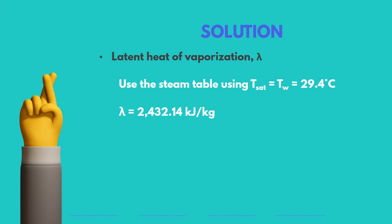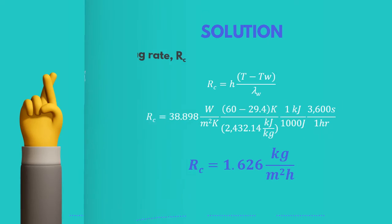We can find the latent heat of vaporization for water by using the steam table at the saturation temperature, which is equal to the temperature of the solid surface, 29.4 degrees Celsius. Solving for the drying rate with the necessary unit conversions, we finally get 1.626 kilograms per hour per square meter.